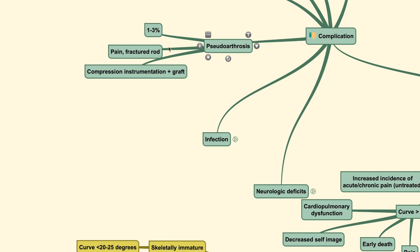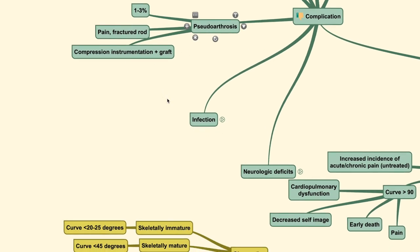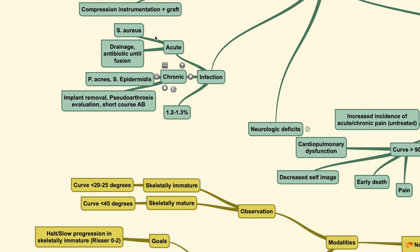Pseudarthrosis is common, occurring in up to 3% of patients, and is usually associated with pain and fractured rods. Management involves compression-type instrumentation along with bone grafting. For infection, acute infection is typically caused by Staphylococcus aureus and is managed with drainage and antibiotic administration until fusion is achieved. Chronic infection is usually caused by other bacteria such as P. acnes and S. epidermidis, requiring implant removal to evaluate for pseudarthrosis and treatment until resolution.